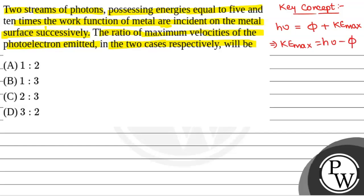Now, in the first case, we have been given energy incident is equal to 5φ. So we will have KEmax1 that will be equal to 5φ minus φ, that is equal to 4φ.